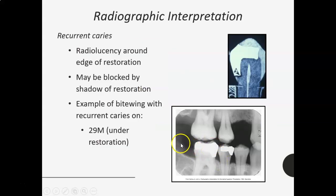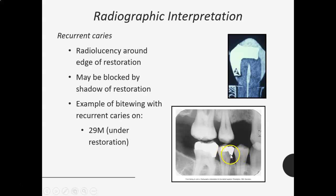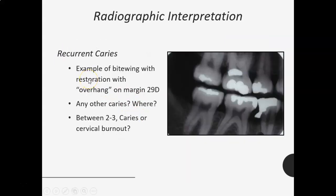Recurrent caries shows as a radiolucency around the edge of a restoration. Here we have a restoration, and right along the edge there's a shadowy mark. Here's a real-life example — there's a bit of an overhang on this restoration and underneath it's very shadowy, probably trapping bacteria, leading to recurrent decay. Sometimes you might not see recurrent decay because it's blocked by the shadow of the restoration, and by the time you do see it, it can be really big.